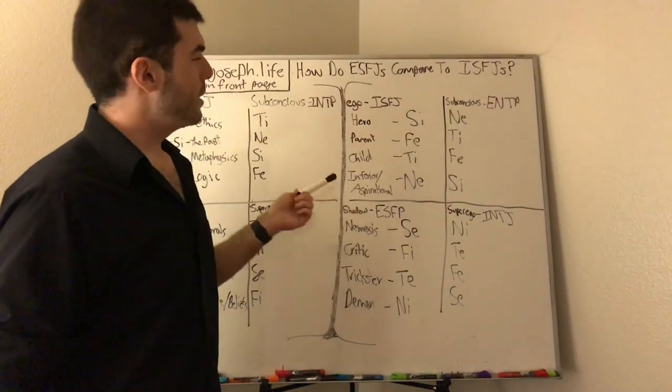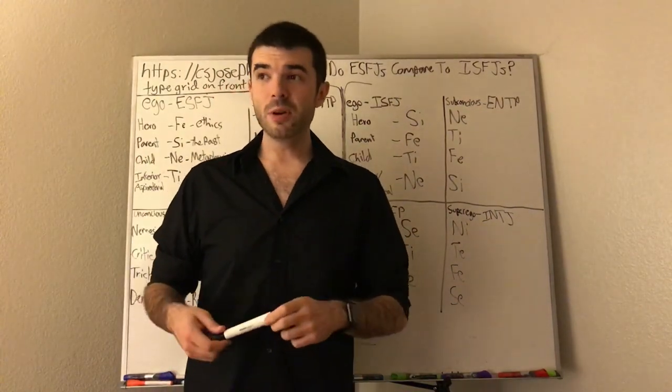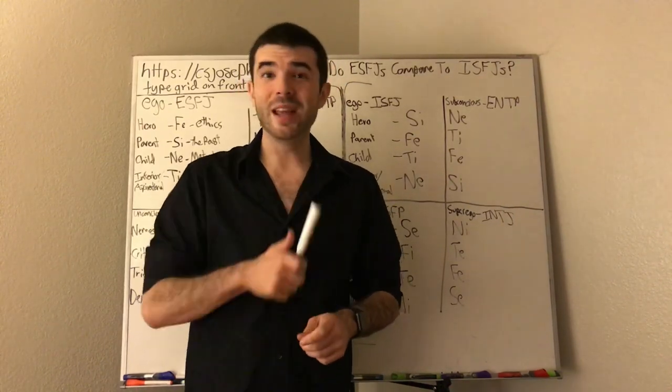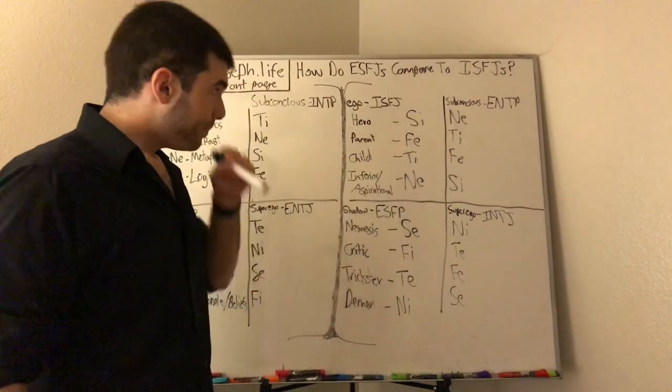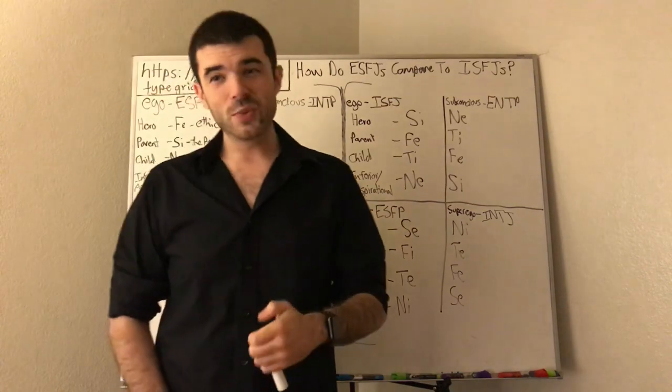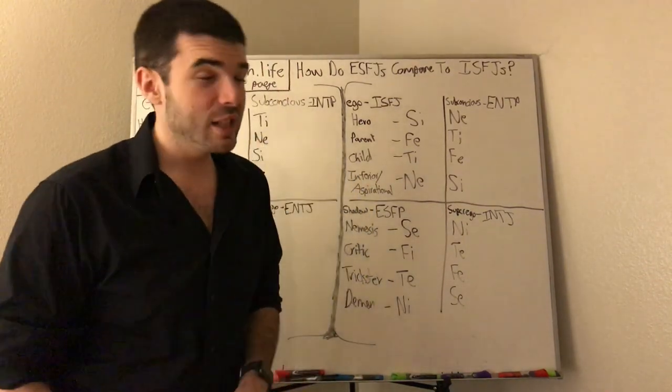And no longer be insecure, and no longer be afraid that they're stupid. Whereas with the ISFJ, they need to be no longer afraid that people are going to screw them. Oh, because people are not out to screw me, and I don't have to spend so much time trying to protect myself, I can start innovating. That's literally how it works. So in the shadow, ISFJ, ESFP shadow.